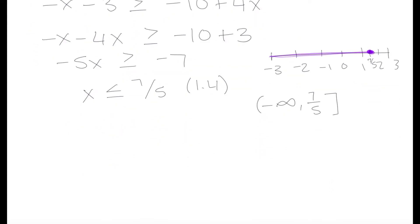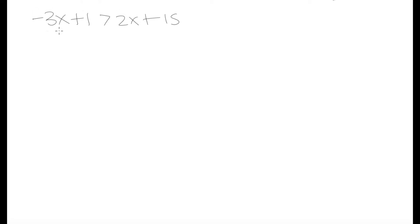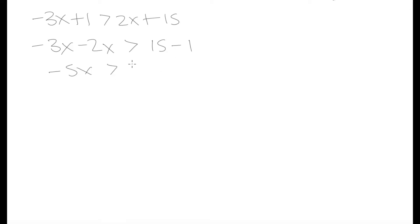Let's go over another example. Let's say we had negative 3x plus 1 is greater than 2x plus 15. We keep negative 3x on the left and move 2x over as minus 2x. We keep 15 on the right and move plus 1 over as minus 1. So minus 3x minus 2x is minus 5x, and that is greater than 15 minus 1 which is 14. Dividing both sides by negative 5 and flipping the inequality gives x is less than negative 14 over 5.